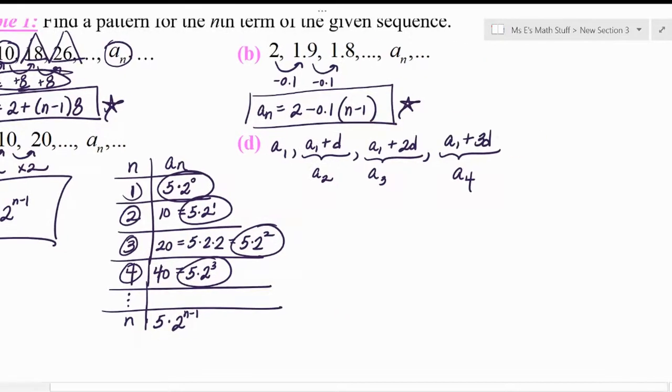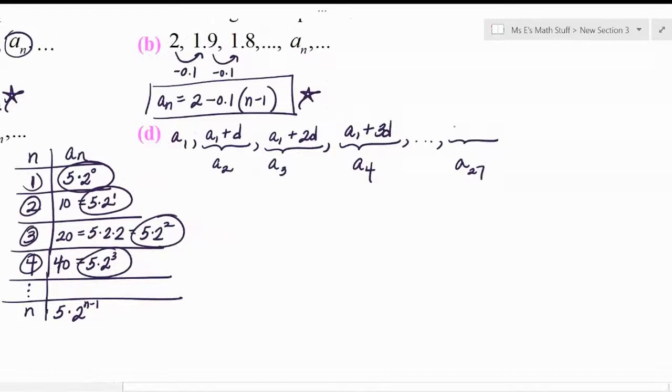So let's say I wanted to know, how do you get to a sub 27? How would you do that? Well, you'd take your first term and you'd add how many common differences to get to the 27th term? Well, you added three of them to get to the fourth term and two of them to get to the third term. So you would have added 26 of them to get to the 27th term.